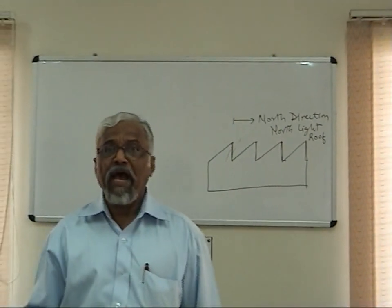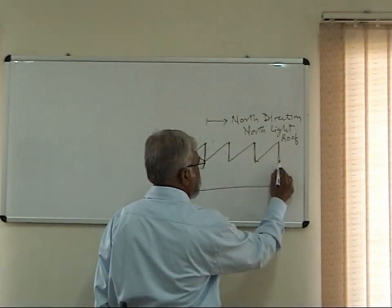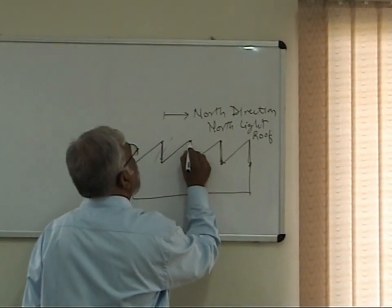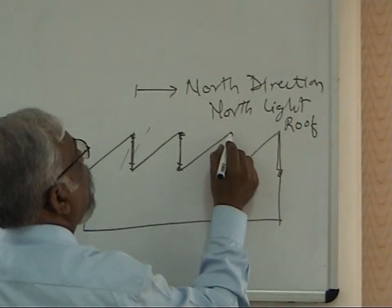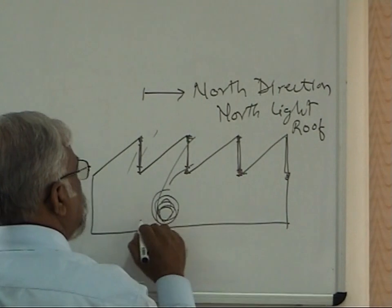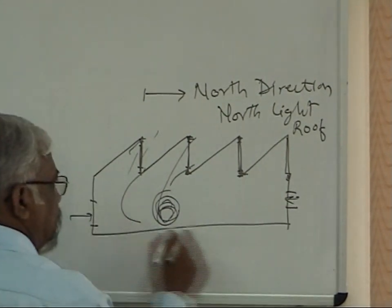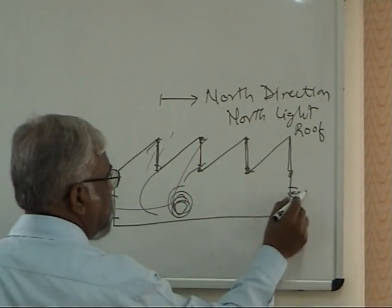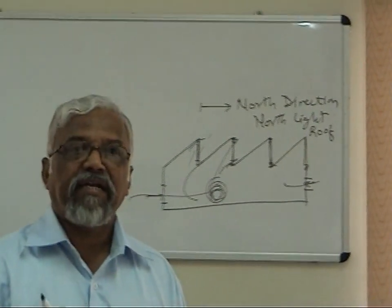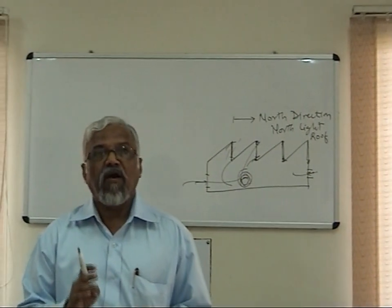Similarly, we have ventilation. In these factories, there are what we call air ducts. At the lower position there are vents, and higher up there are also vents. Whatever air becomes hot is taken away through these upper vents, and fresh air enters from the sides of the walls. So air circulates inside and is taken out through the vents, maintaining ventilation inside the factory building.